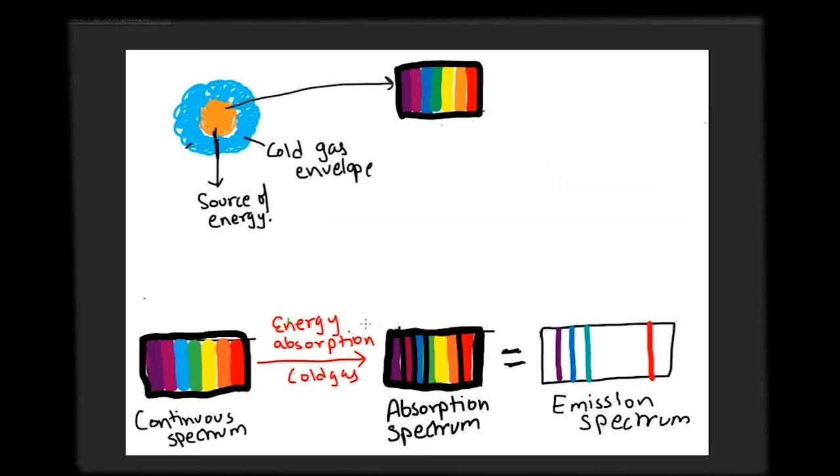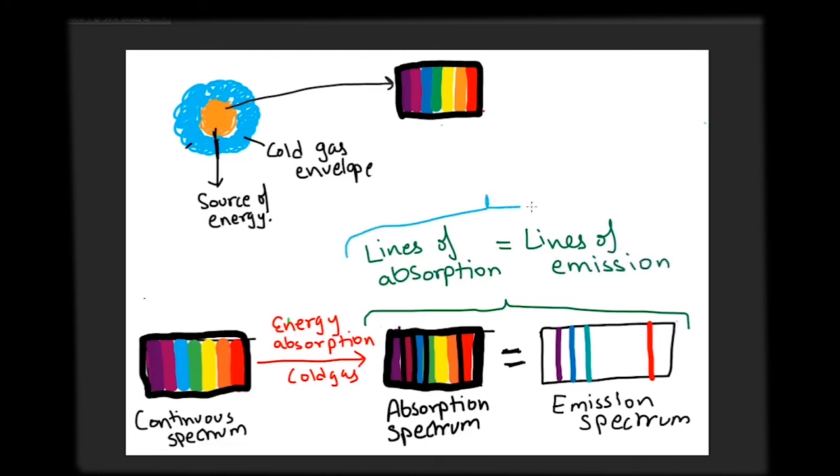As long as the heat source is present, the cold gas will not be able to radiate the absorbed heat and stays excited. The lines of absorption spectrum exactly match the lines of emission spectrum of elements because the same energy that is absorbed to go from one energy state to another is emitted back when the electron returns back to its initial state.